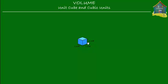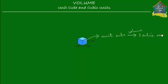The volume of a unit cube is equal to one cubic unit. So this is a unit cube and its volume is equal to one cubic unit. Cubic unit is a measure of volume, and one cubic unit is the volume of a unit cube — this solid object over here.